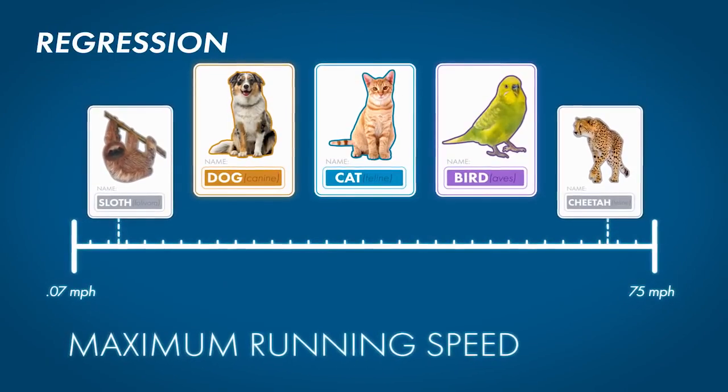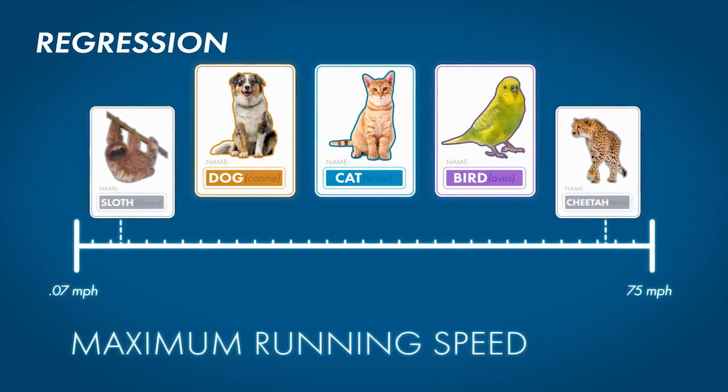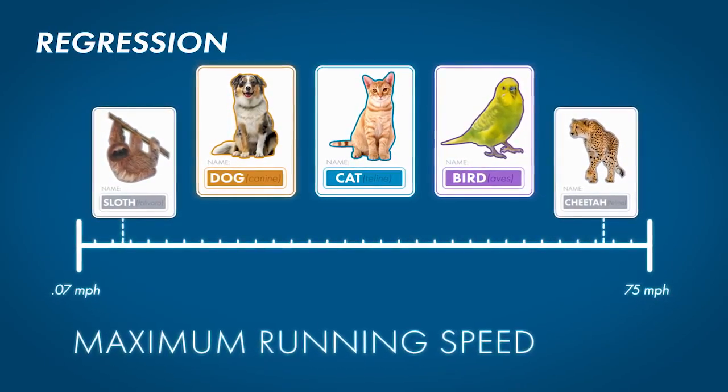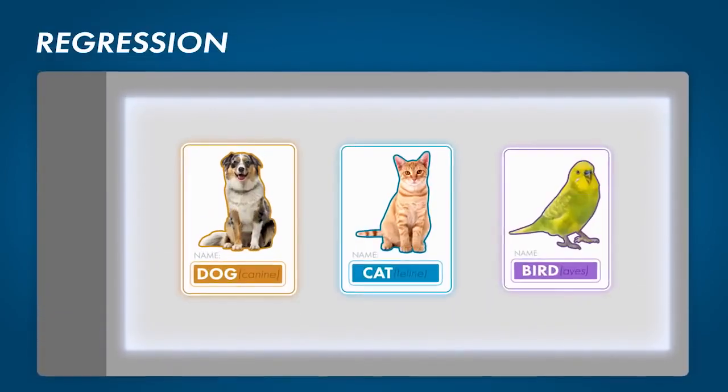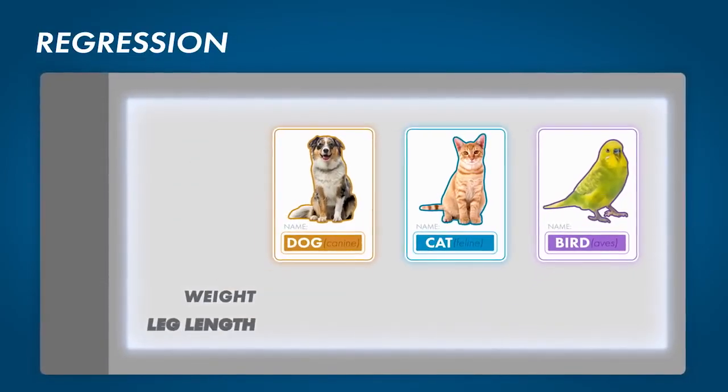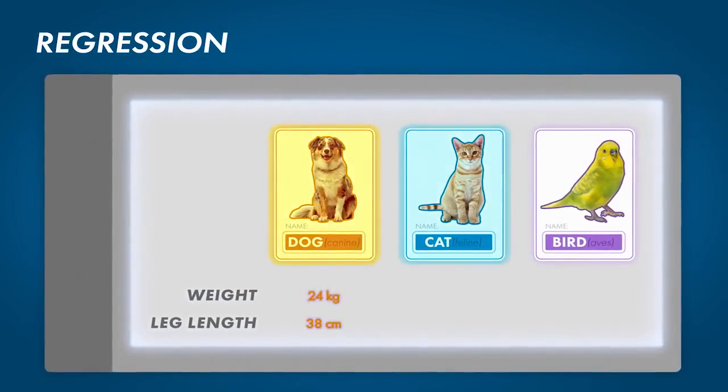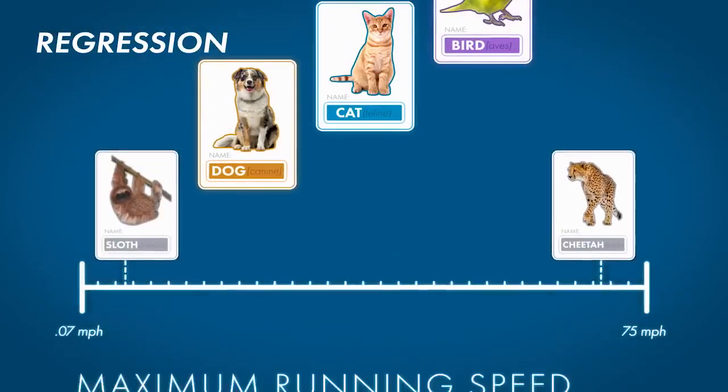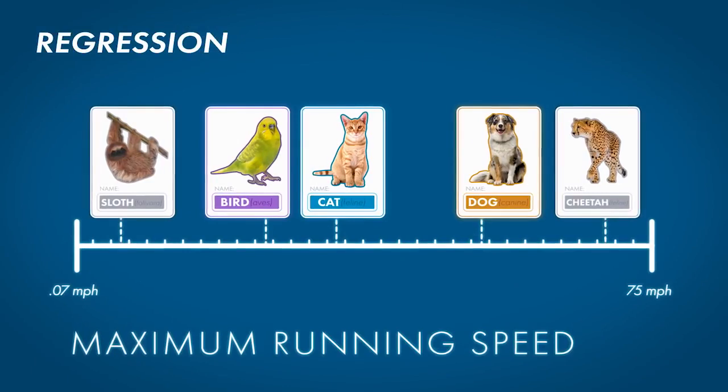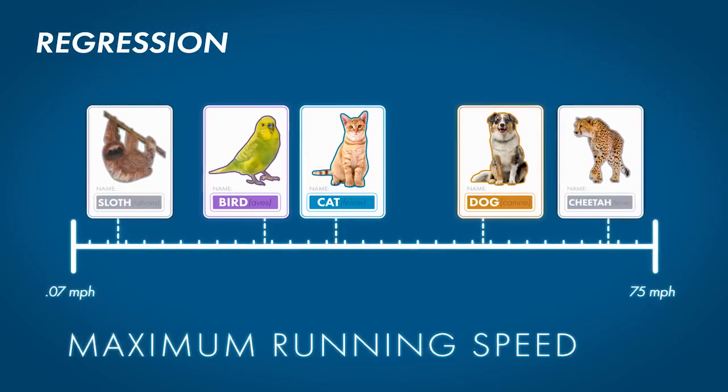To build a model that will predict speed, we do what we did before. Select features that may be relevant. For example, let's try the weight of an animal and how long its legs are. The model uses these features to estimate where the animal lands on that speed continuum.